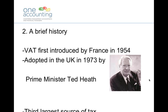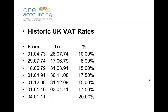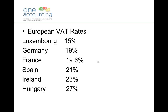Ted Heath was also the Prime Minister that took Great Britain into the Euro. Quite interestingly, VAT is actually the third largest source of tax for the government, accounting for about 13 or 14% of all tax revenues in the UK. We're currently sitting at 20% VAT, but as you can see from this slide, the VAT rate has fluctuated quite significantly over the years. Since the late 70s, the VAT rate has gone between 15% and 20%.